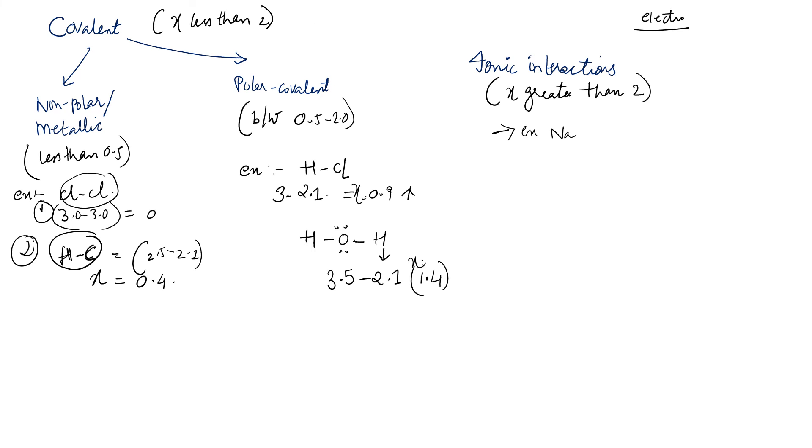But when the electronegativity is greater than 2, it comes under ionic interactions. And also ionic interactions example is NaCl, wherein oppositely charged atoms are coming together—they are attracted—and when they are attracted they form lattice because ionic interactions do not have directionality. There is no directionality.